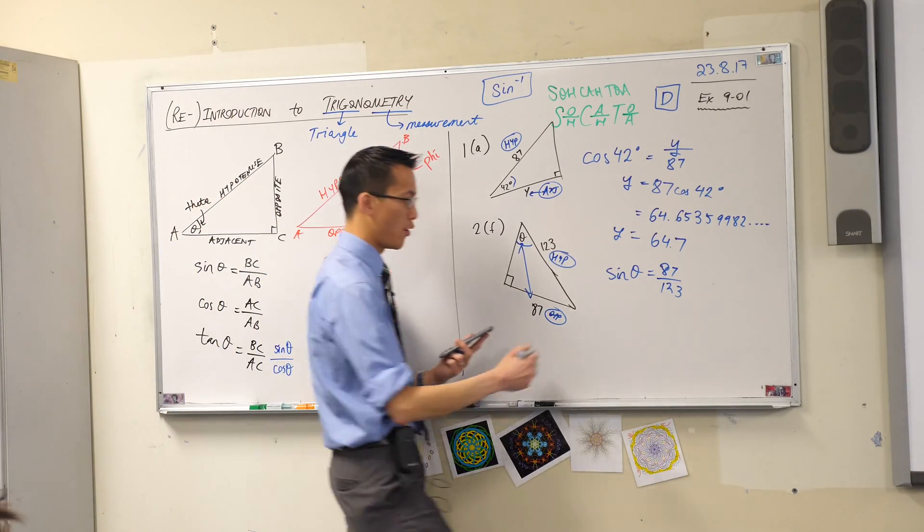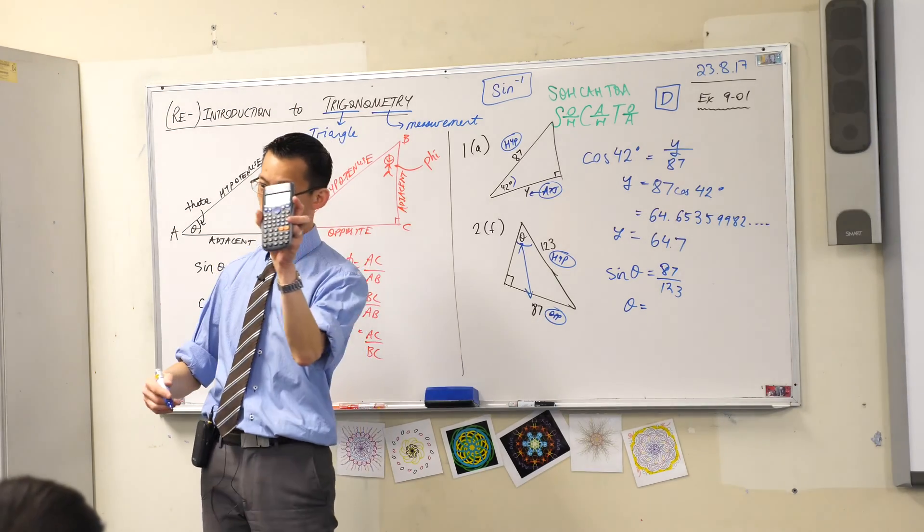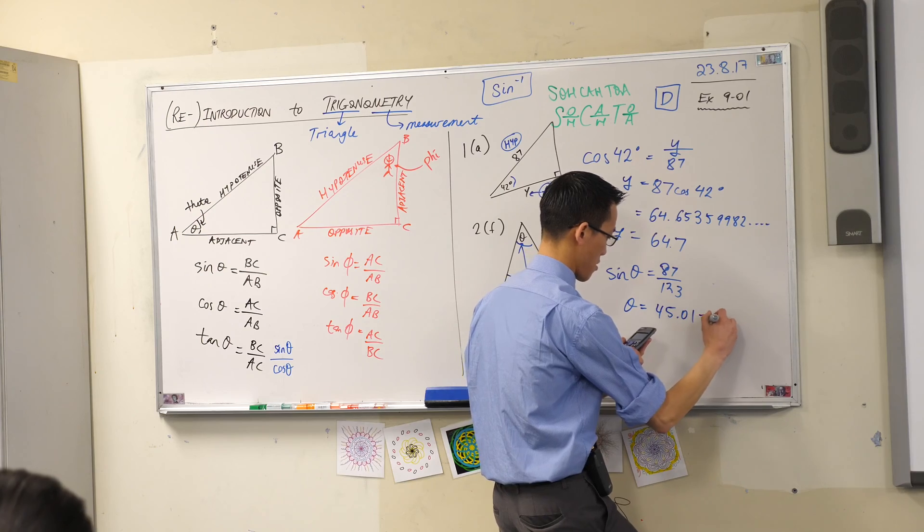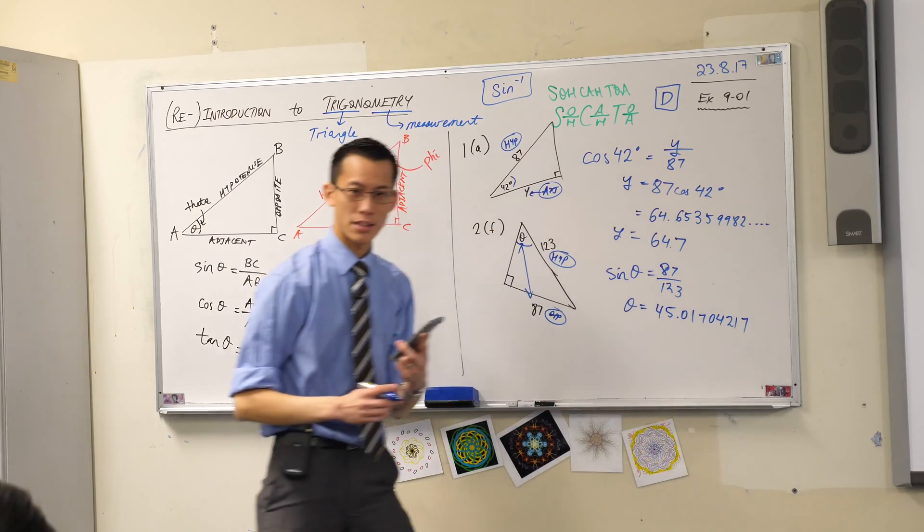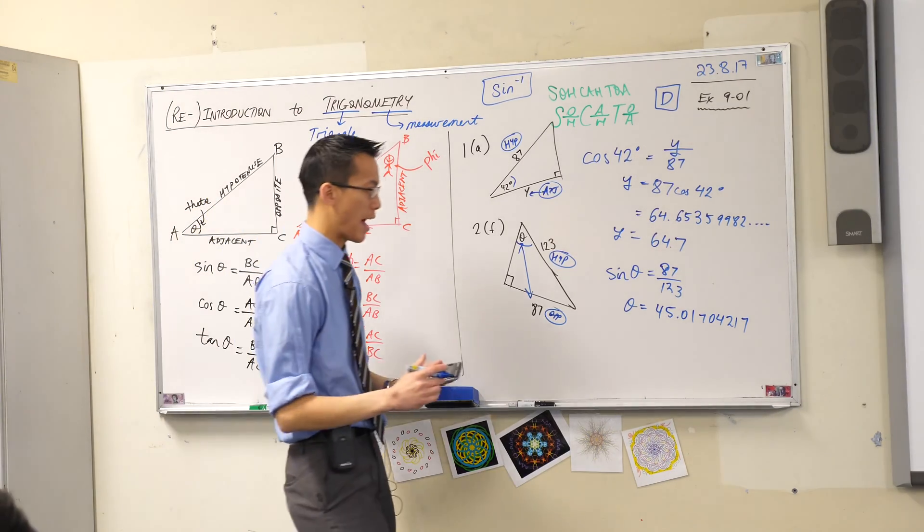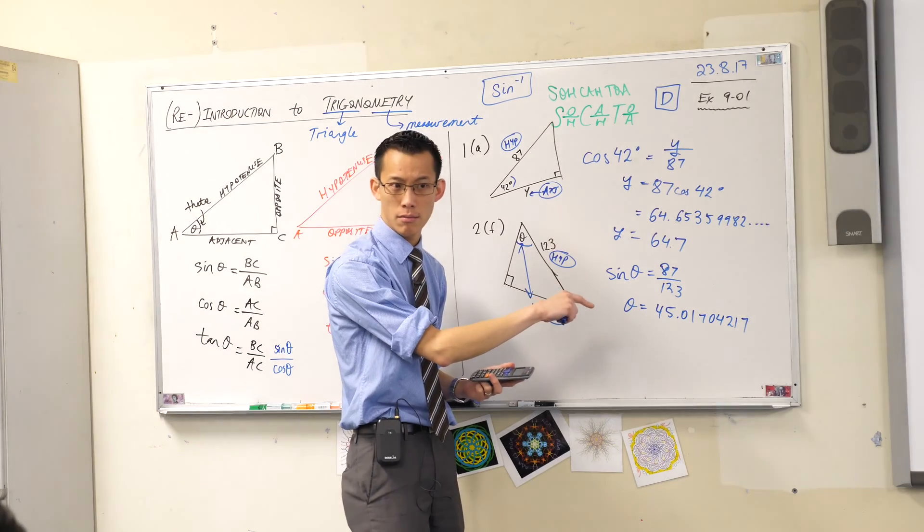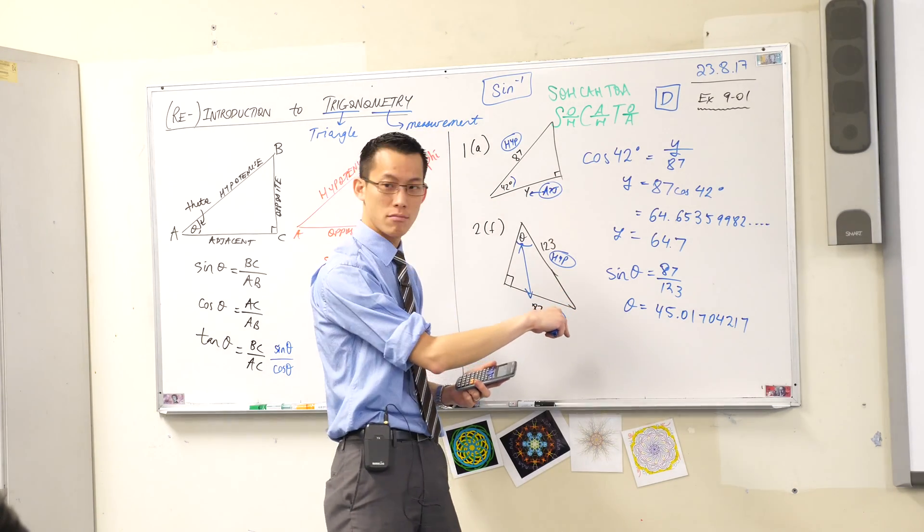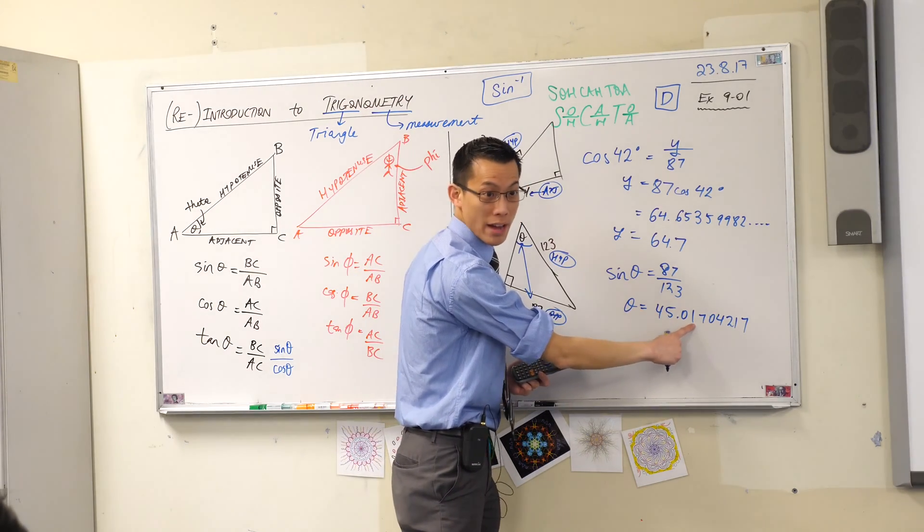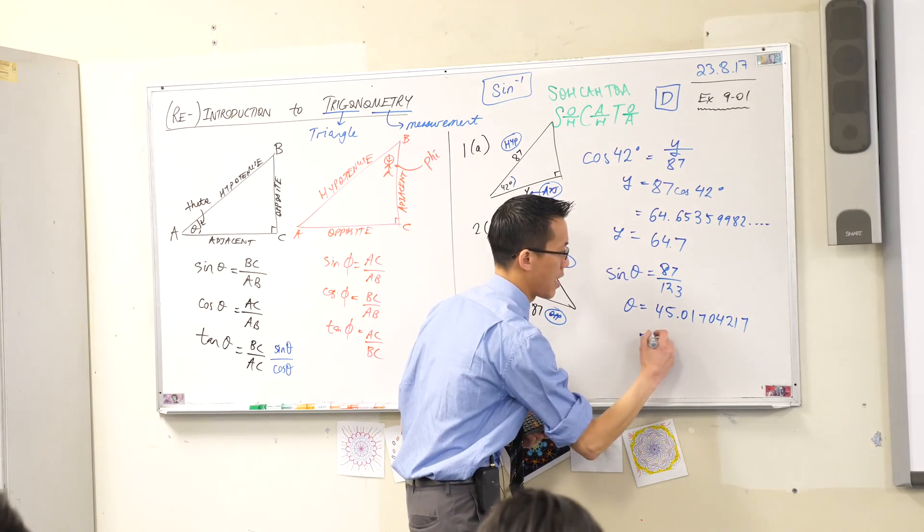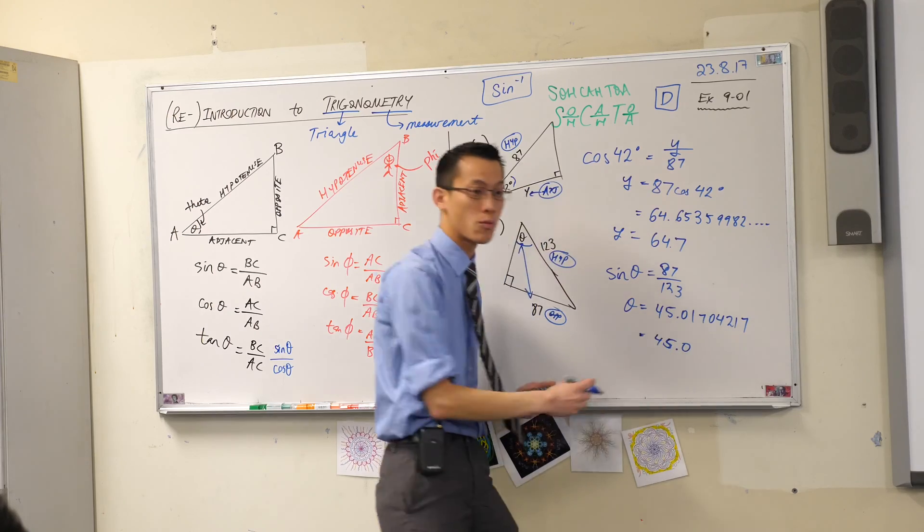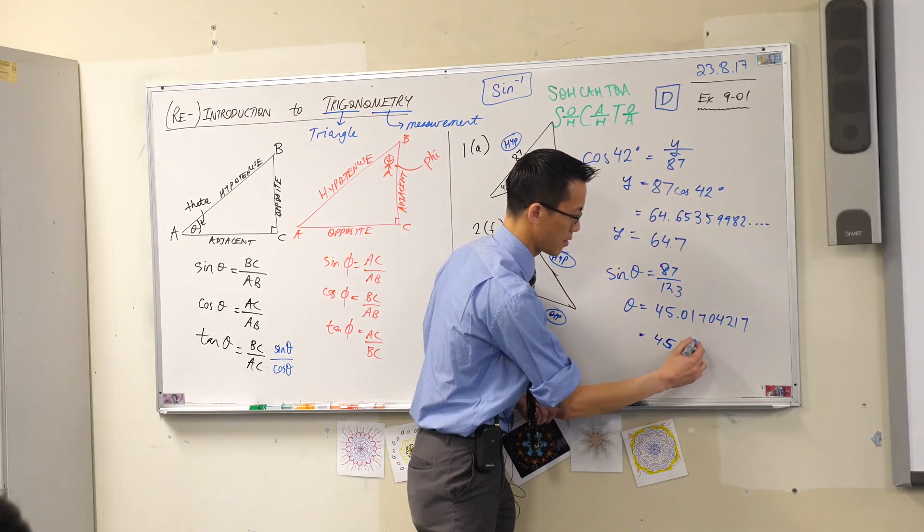And then you're going to put in 87 over 123. So just like before, I'm going to encourage you to write all the decimal places that you see. Okay, like so. Now again, they've asked us to do one decimal place of accuracy. So in this case, it would be 45 point one decimal place. That's a zero. Is this enough to make the zero round up? And the answer is no. So therefore, 45.0, and this is in degrees.